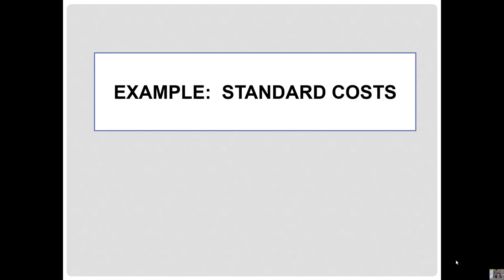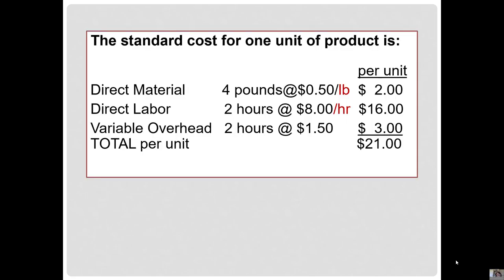Turn in your lecture notes to the standard costing example, and we'll get started. The standard cost for one unit of product is: direct material, we need 4 pounds at 50 cents per pound, or $2 per unit. Direct labor, 2 hours at $8 per hour, or $16 per unit. Variable overhead, 2 hours at $1.50 per hour, or $3 per unit. The total per unit cost is $21 for the variable manufacturing costs.